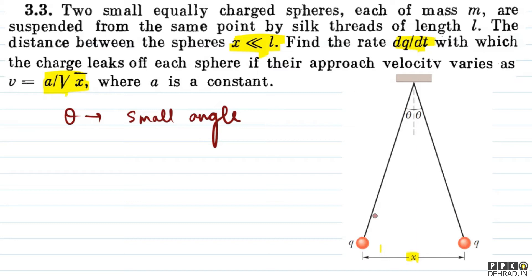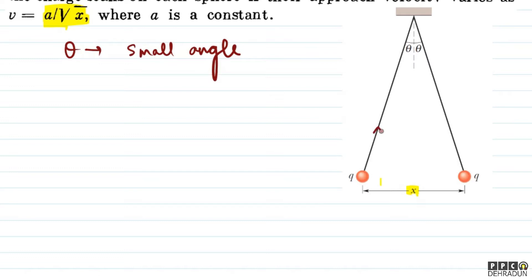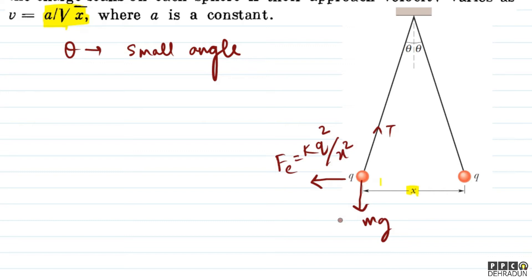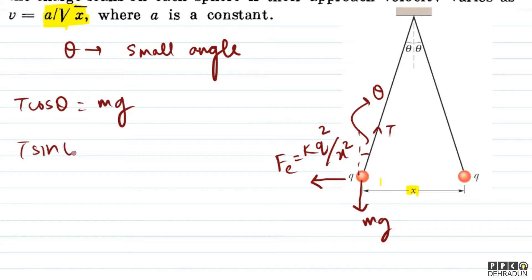तो देखिए बच्चों, अगर हम लोग free body diagram बनाएं किसी एक sphere का, तो उस पर कौन-कौन से forces होंगे? एक तो tension T होगा, उसके अलावा force of gravity mg होगा, और एक electrostatic repulsion वाला force आएगा। Left वाले sphere पर यह left की तरफ आएगा। Electrostatic repulsion Fe = kq²/x² है। Equilibrium में T cosθ = mg और T sinθ = kq²/x² आ जाएगा।